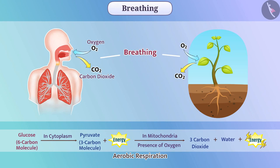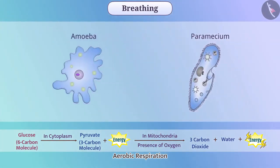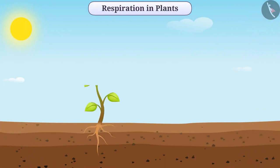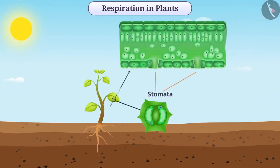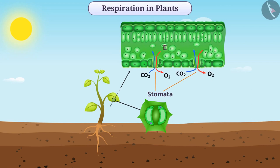Different methods of respiration can be seen in different organisms. In unicellular organisms, gases are exchanged by diffusion. In plants, exchange of gases takes place through stomata. There is intercellular space between the cells, due to which cells are in contact with air, and they exchange carbon dioxide and oxygen by diffusion.